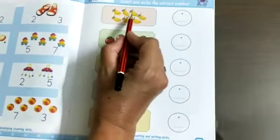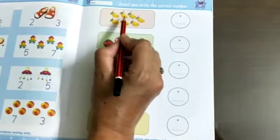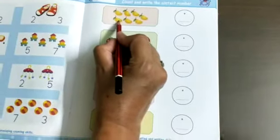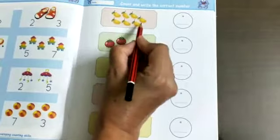We will count how many objects are there. See, these are mangoes. We will count them slowly: 1, 2, 3, 4, 5, 6, 7.